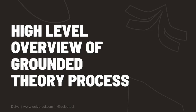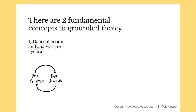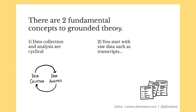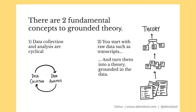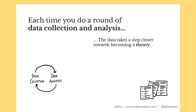Let's go through a high-level overview of the grounded theory process. There are two fundamental concepts to understand. The first is that data collection and analysis are cyclical — you don't just collect data once, analyze, and determine your conclusion; you continuously collect and analyze data in a cycle. The second concept is that you start with raw data, such as transcripts, and then turn that into a theory grounded in your data. Every time you do a round of data collection and analysis, your data takes a step closer towards becoming a theory.